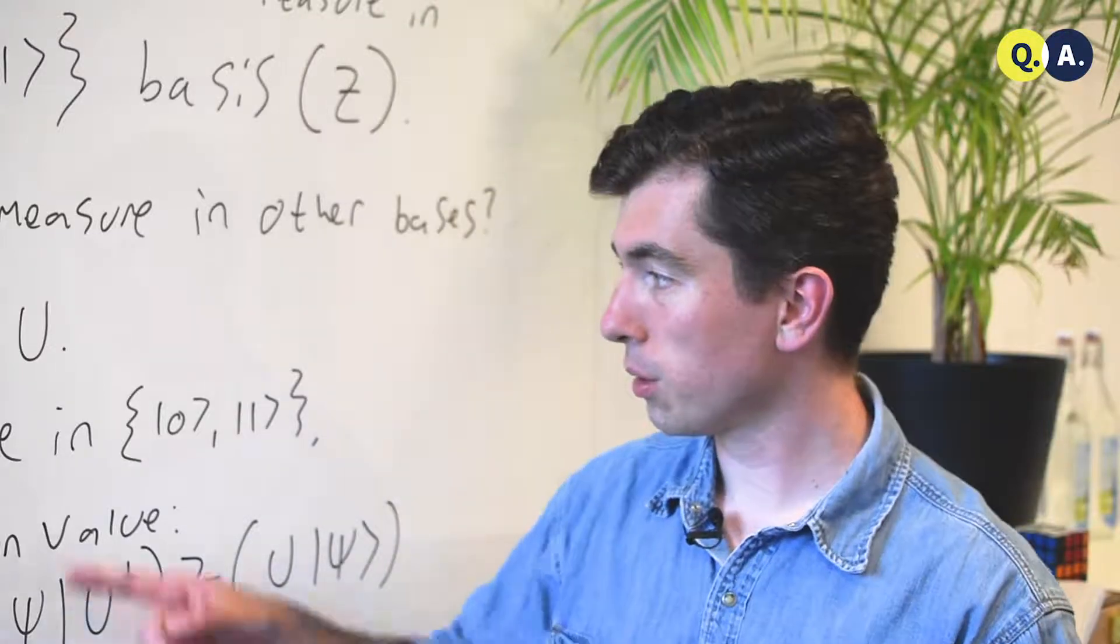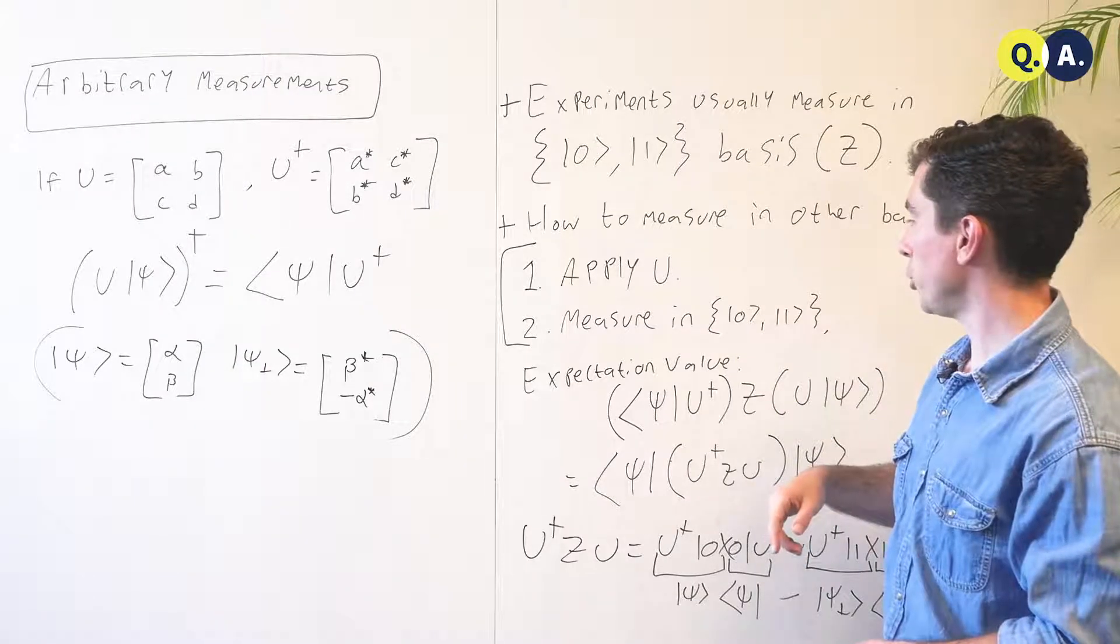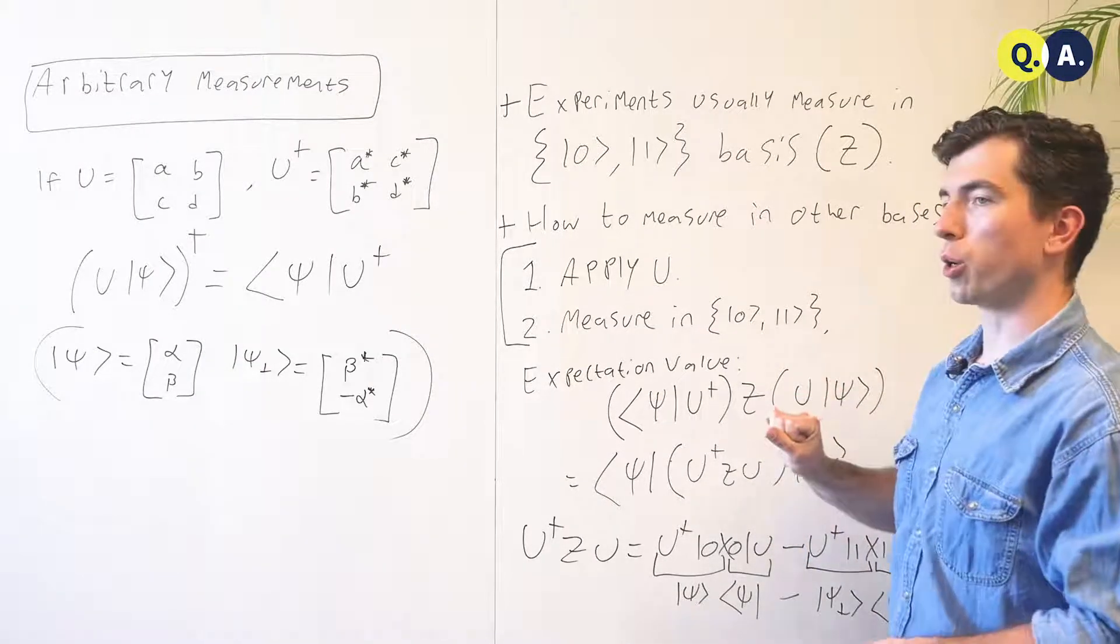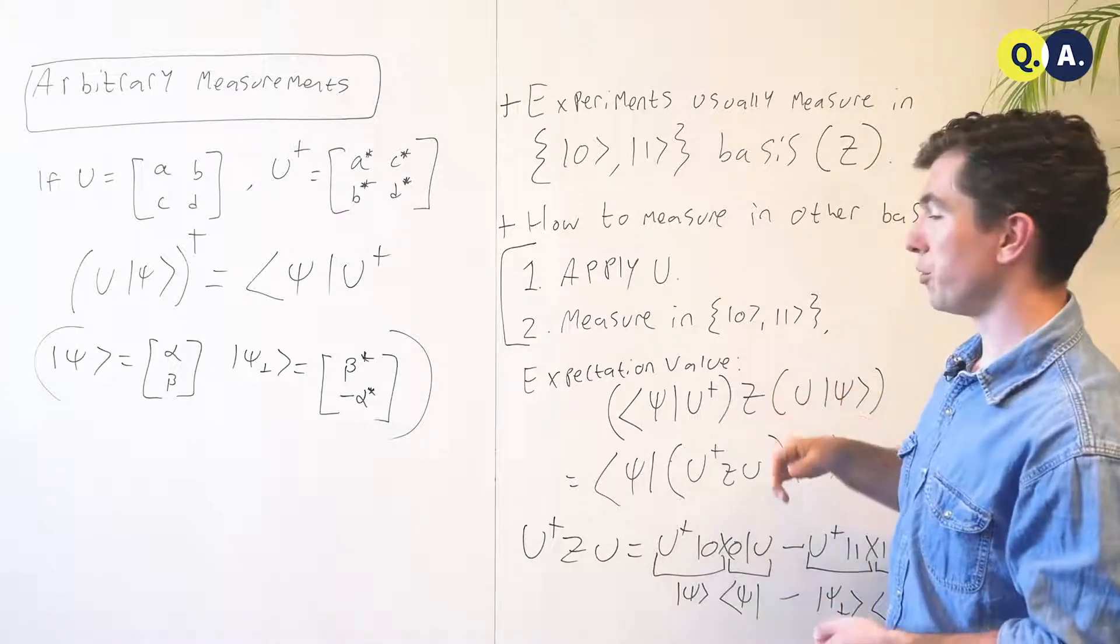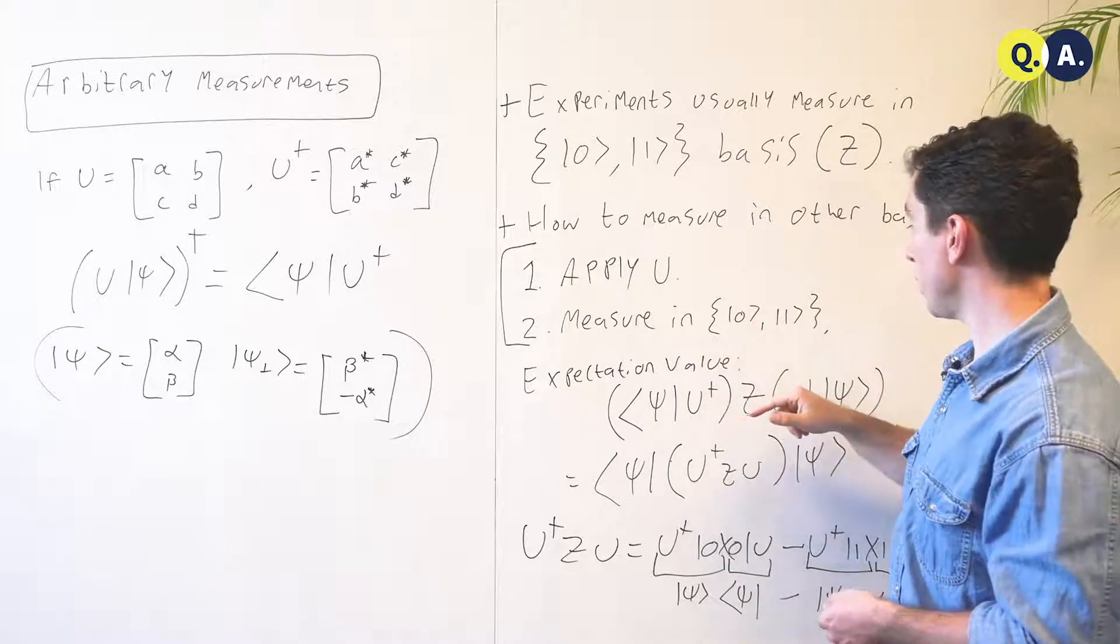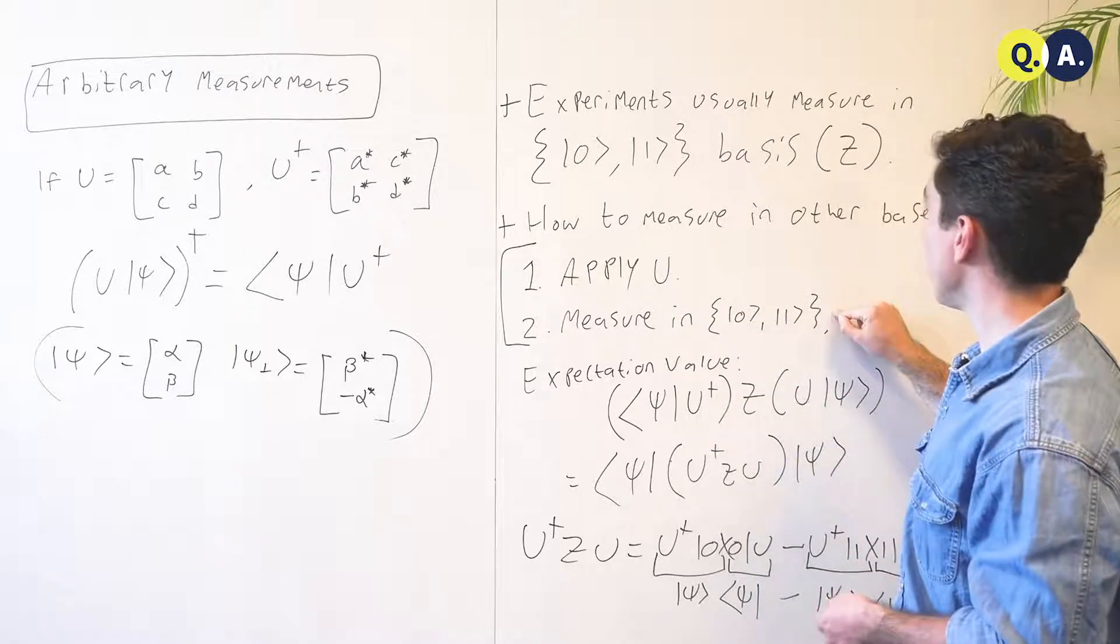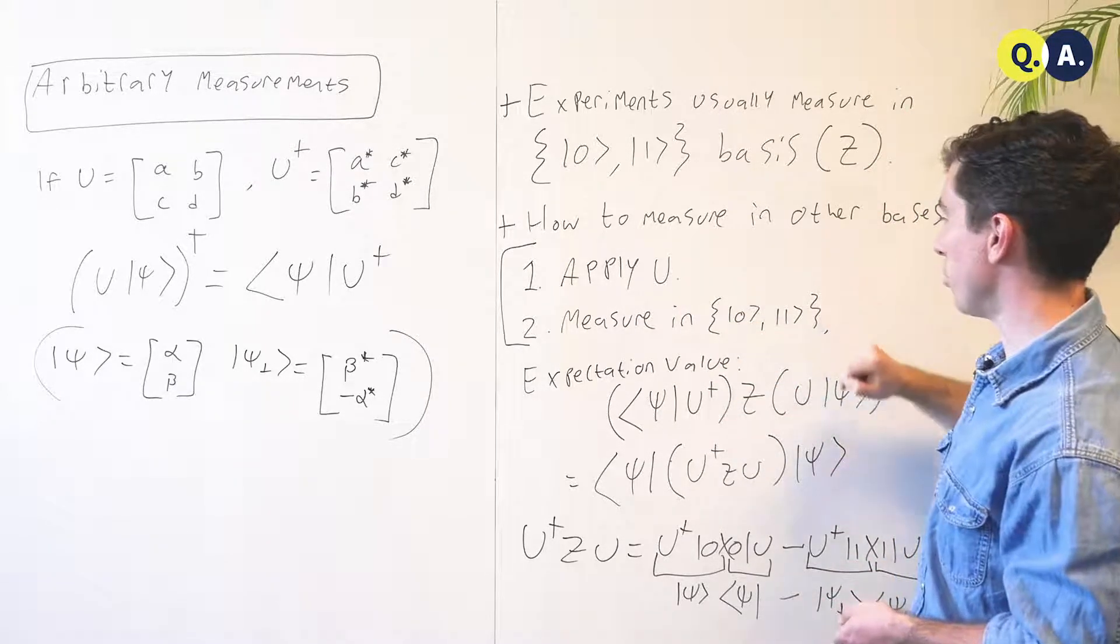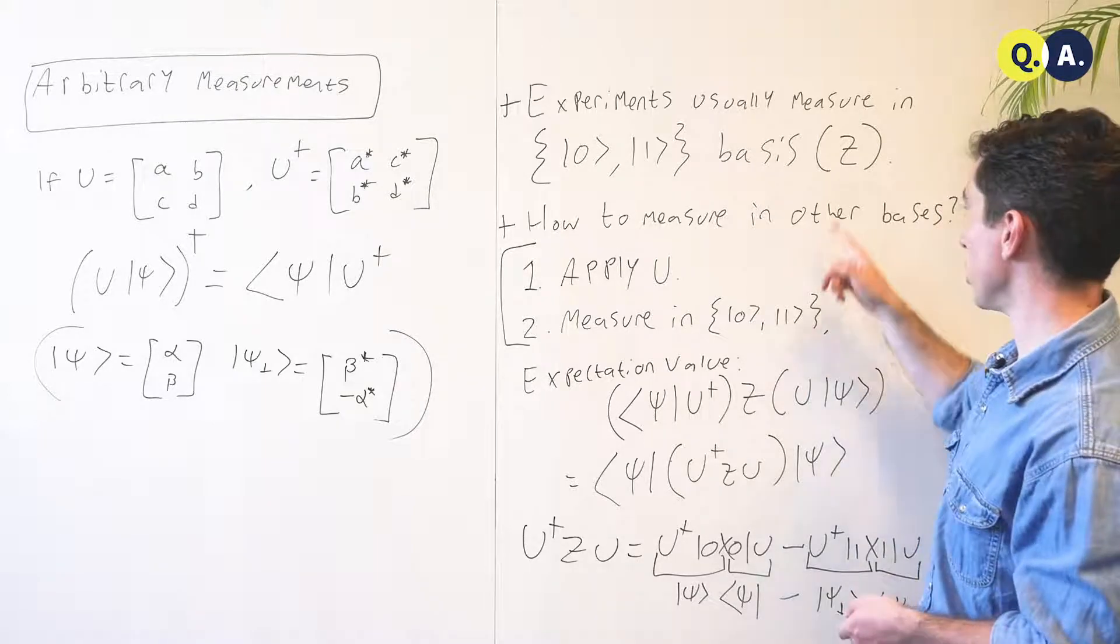So we have a two-step plan to solve this. First, we're going to apply some operator u, and then we're going to measure in the zero, one basis. Now, if you've got a controllable qubit, you can apply an operator u as you see fit, and as discussed in the statement of the question, we can measure in the zero, one basis. We can measure the z operator.